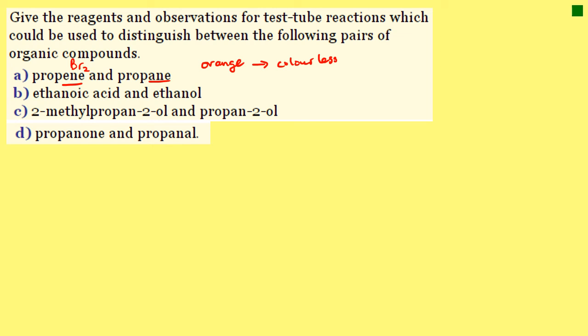Part B: we've got an acid versus an alcohol — ethanoic acid and ethanol. We would use the carbonate test: add a spatula of sodium carbonate to both. The acid would fizz, and we would then bubble the gas through lime water and see it go cloudy. That would confirm the original compound was ethanoic acid. Both tests done at room temperature.